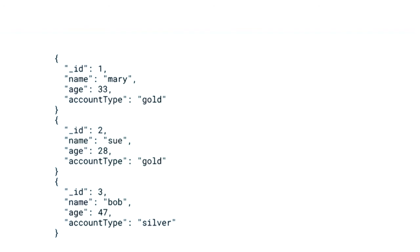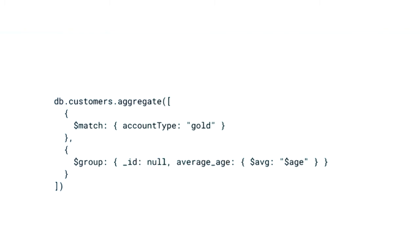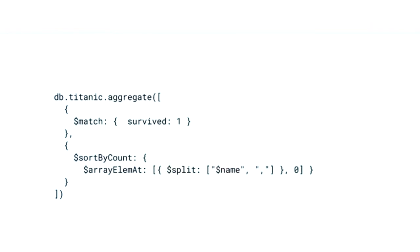First, let's look at how we would find the average age for customers with an account type of gold given the following simple schema, where we have a name, account type, and age field. We can see that the two entries within the account type of gold have ages 33 and 28, averaging to 30.5. Here is the aggregation that expresses this. Aside from analysis, we also said preparation and shaping. Later in the course, we will work with the Titanic dataset, a famous dataset people use to develop models to try to predict survival. This aggregation is succinct, powerful, and able to work with data without a lot of preprocessing.